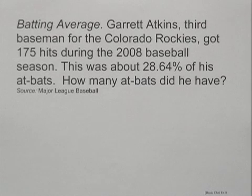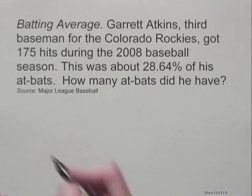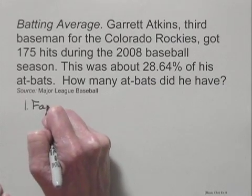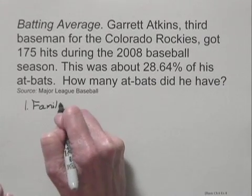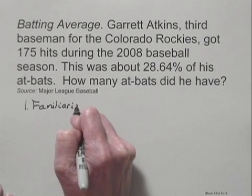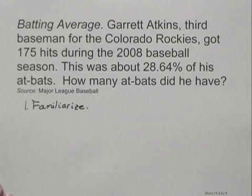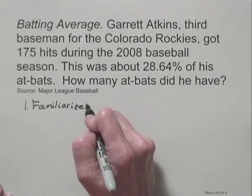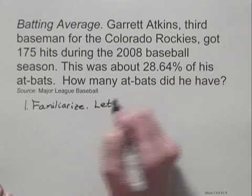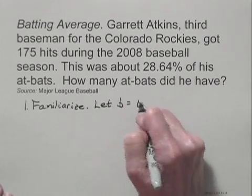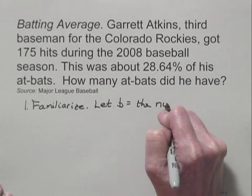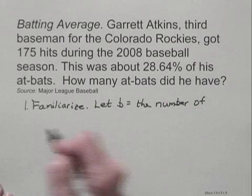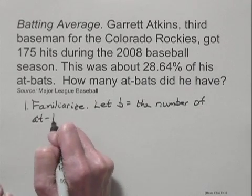We'll use the five-step problem-solving process here. The first thing we'll do is familiarize ourselves with the problem. We're asked to find the number of at-bats, so let B equal the number of at-bats that he had.